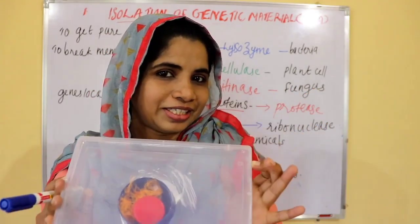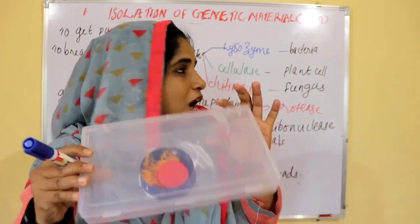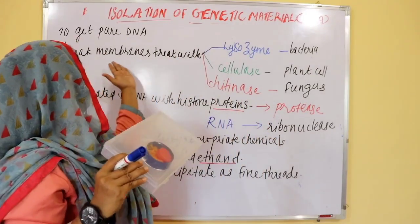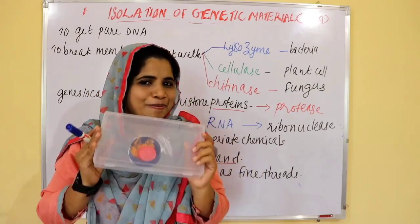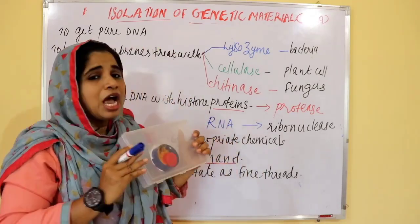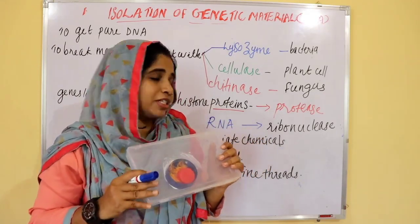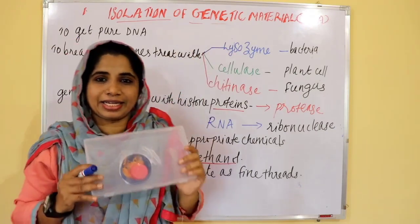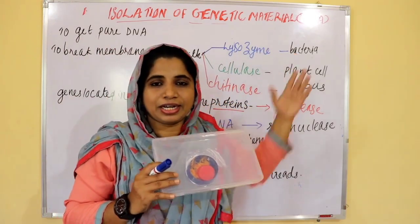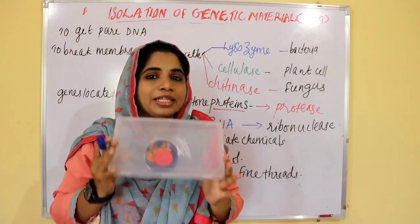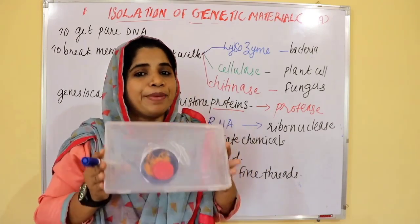How do we isolate the genetic material? First, we have to break the membrane. We break the membrane chain — for bacteria, we use an enzyme to break the membrane.